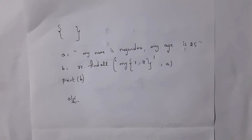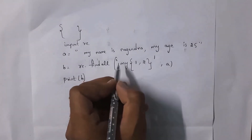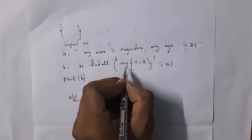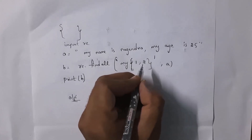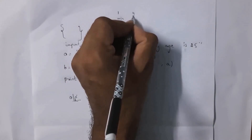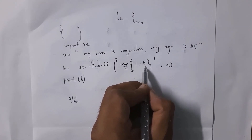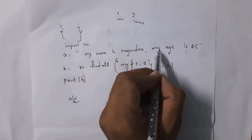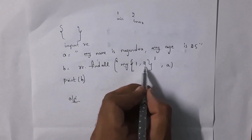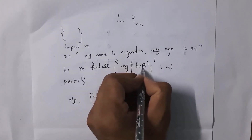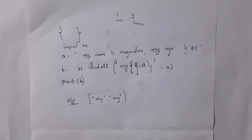Next I will explain curly braces. Inside findall, I written 'my{1,2}' where 1 is minimum and 2 is maximum. If 'my' is available minimum once or maximum twice, I get output. In the sentence 'my' appears twice, so condition is satisfied and output is ['my', 'my']. If I write minimum as five and maximum as two — meaning it should appear at least five times — but 'my' is only available twice, this condition is not satisfied and it displays an empty list.